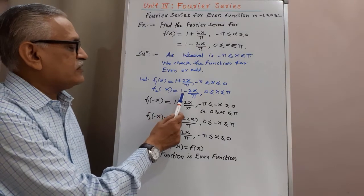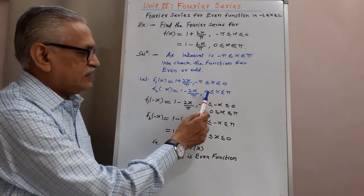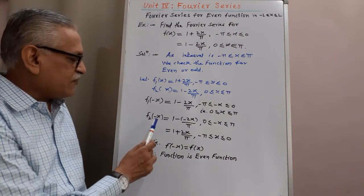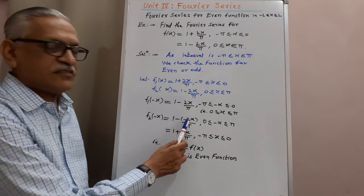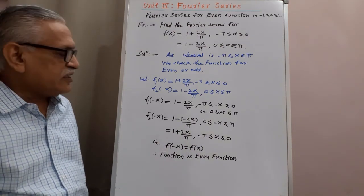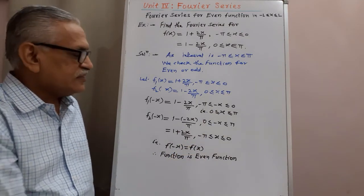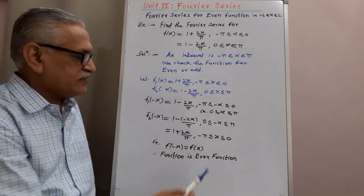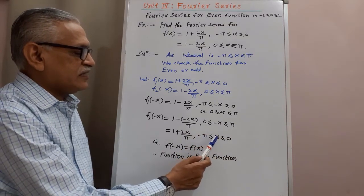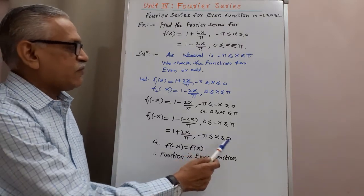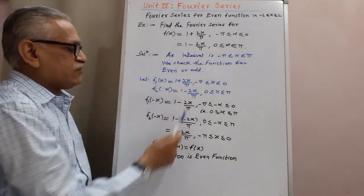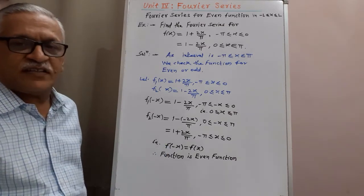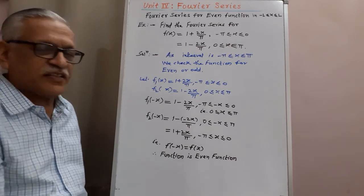And f₂(x) = 1 − 2x/π for 0 ≤ x ≤ π. Replacing x by −x, we get f₂(−x) = 1 + 2x/π, for −π ≤ x ≤ 0. The original value in −π to 0 is 1 + 2x/π, and here we are getting the same value. Therefore we get f(−x) = f(x), the same function, and that's why the function is an even function.